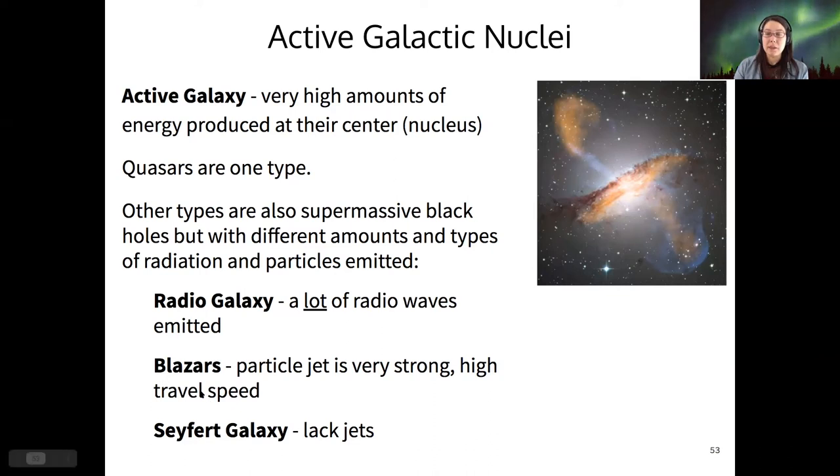There's a kind called blazars, which is when we're looking straight down at one of those particle jets, and that jet is blue shifted to extremely high energies with very high travel speeds. That's a pretty cool one. And then a Seyfert galaxy is just any active galactic nucleus that doesn't have these jets. We would expect maybe they've already settled down.